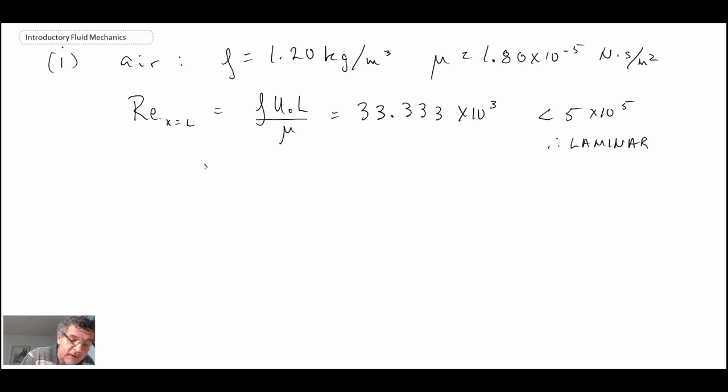Let's write out his equation. We have delta over x is approximately 5.5 divided by Reynolds number evaluated at x equals L to the one-half. The x here is going to be the length of the plate. So evaluating that...